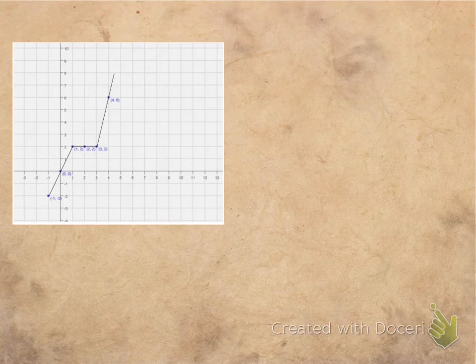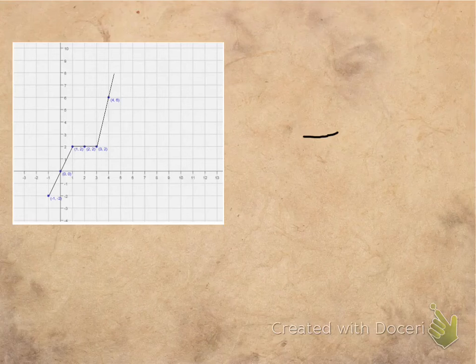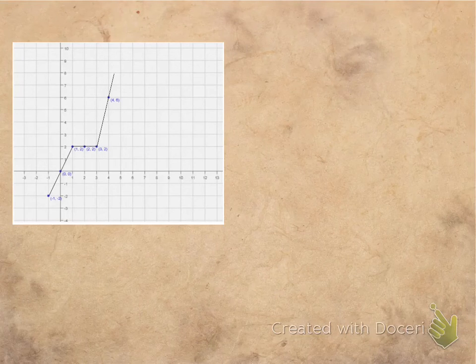This is another example that you can try by yourself. It is an independent example. For this graph, find the table of coordinates or make a chart for this graph.